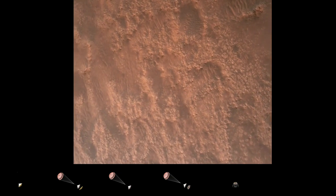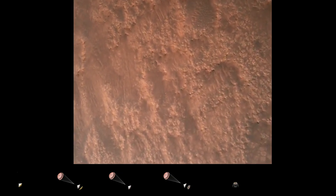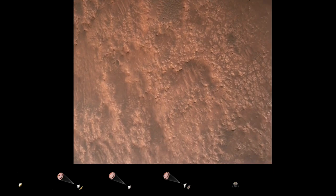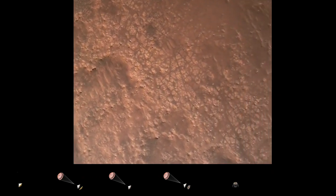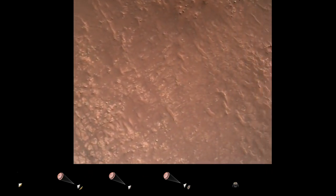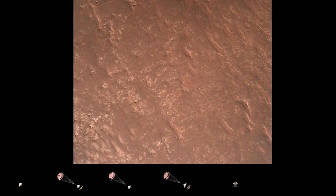Terrain safety bravo. We have completed our terrain relative navigation. Current speed is about 30 meters per second. Altitude of about 300 meters off the surface of Mars.